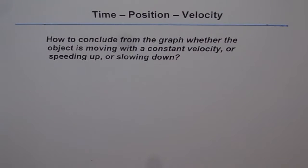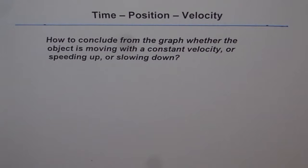Time, Position, Velocity. How to conclude from the graph whether the object is moving with a constant velocity or speeding up or slowing down?